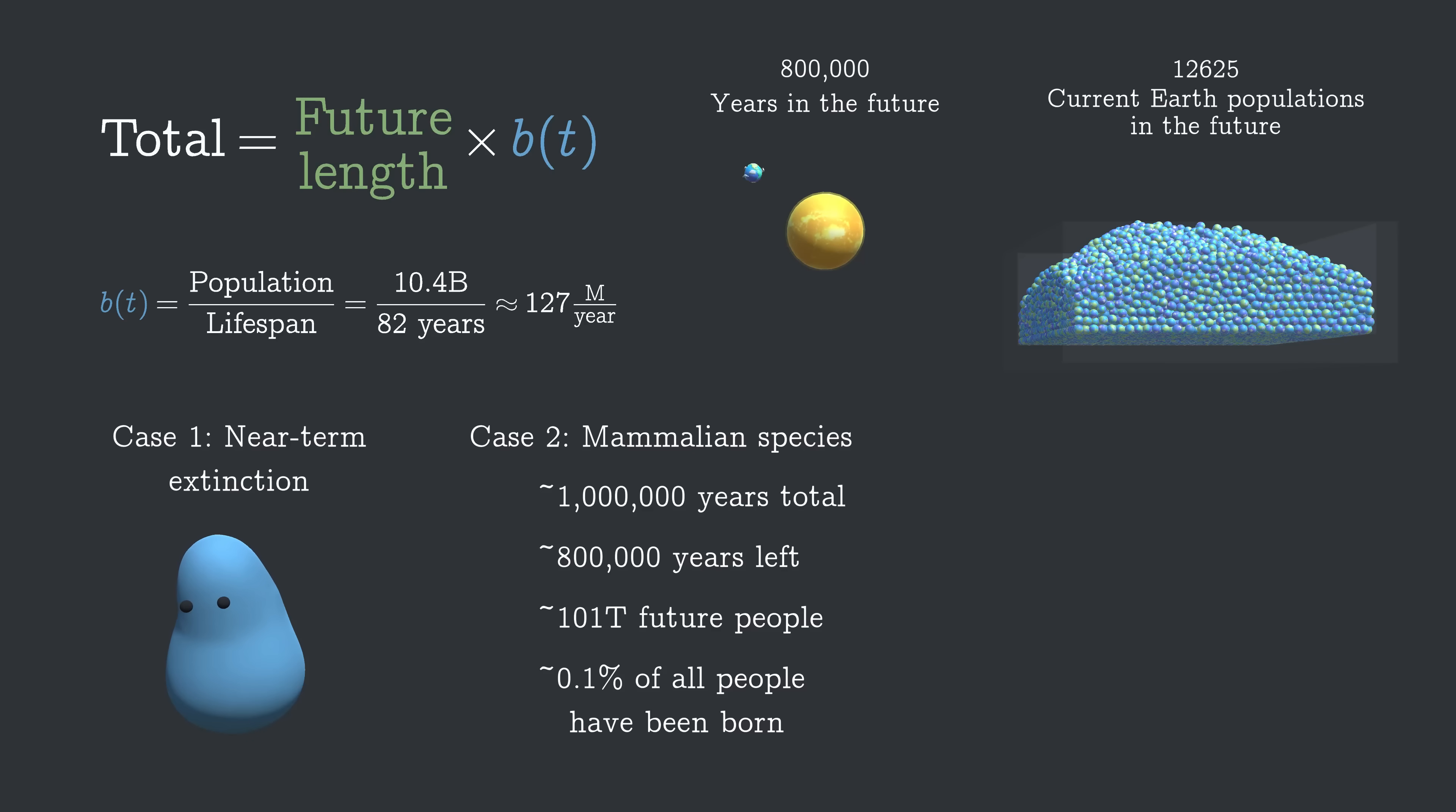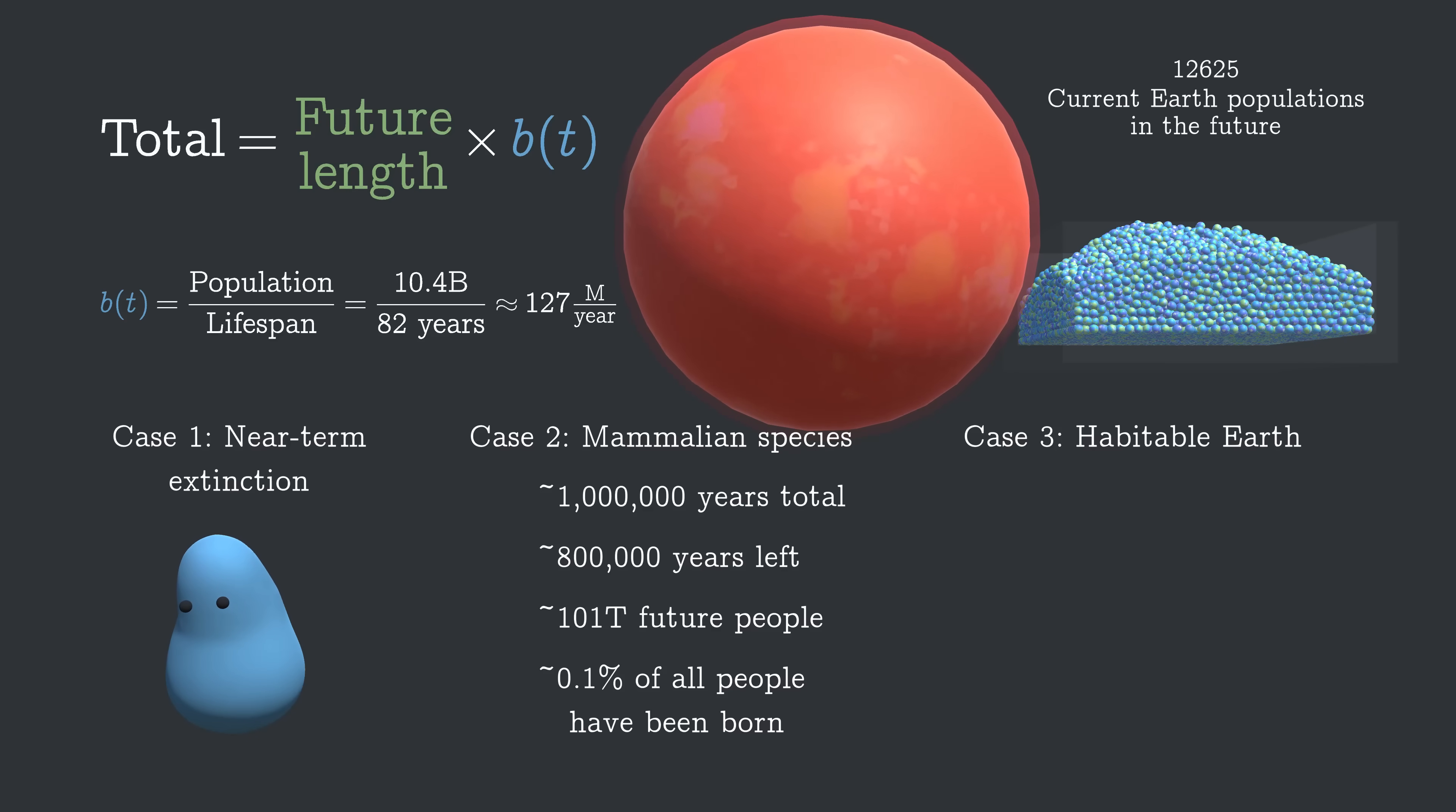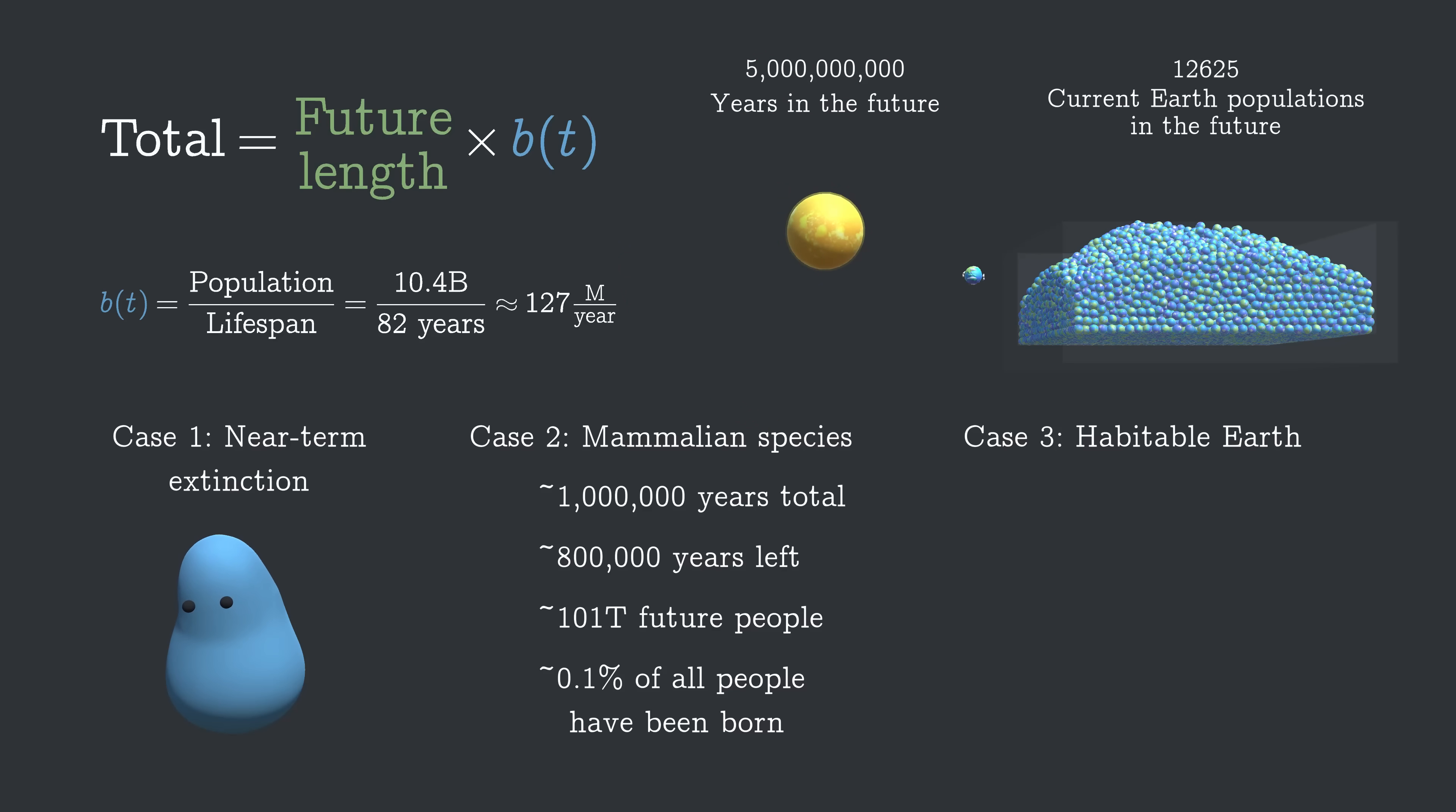The next case is one where we survive as long as the Earth is able to support us. The Sun has about 5 billion years left before it runs out of hydrogen in its core. After that, it'll transform into a red giant and envelop the Earth. But before that happens, the Sun will increase in brightness.